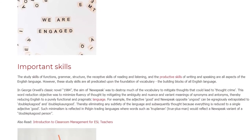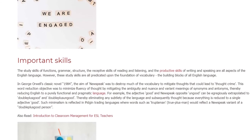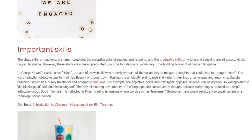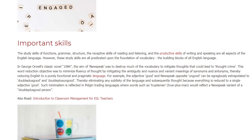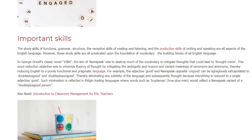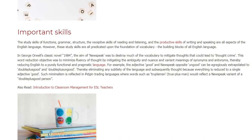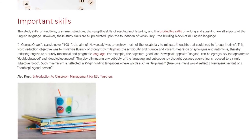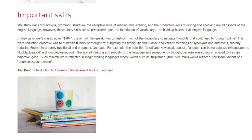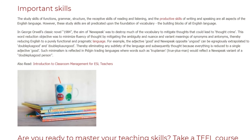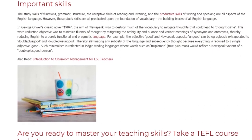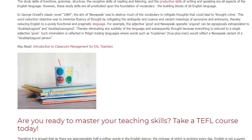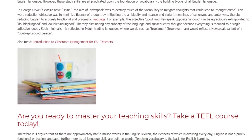In George Orwell's classic novel 1984, the aim of Newspeak was to destroy much of the vocabulary to mitigate thoughts that could lead to thought crime. This word-reduction objective was to minimize fluency of thought by mitigating the ambiguity, nuance, and variant meanings of synonyms and antonyms, thereby reducing English to a purely functional and pragmatic language. For example, the adjective 'good' in Newspeak — with its opposite 'ungood' — could be extrapolated to 'double plus good,' thereby eliminating any subtlety of the language. Such minimalism is reflected in pidgin trading languages where phrases like 'trouble man' or 'true plus man' would reflect a Newspeak variant.